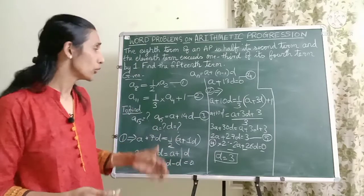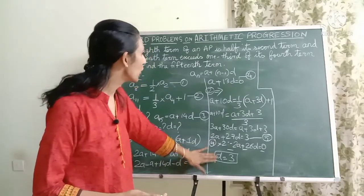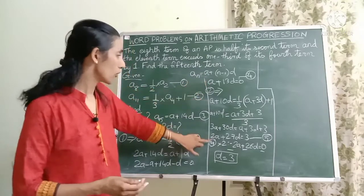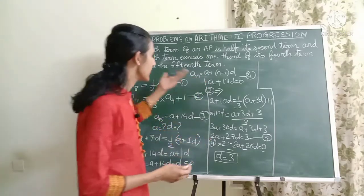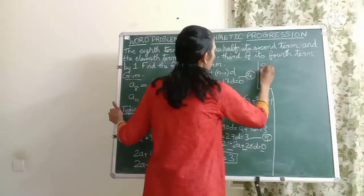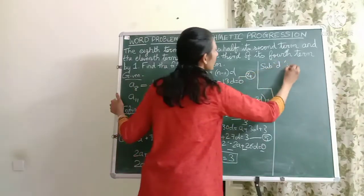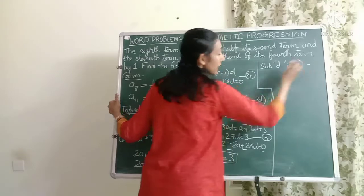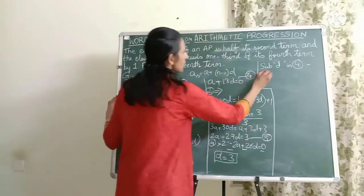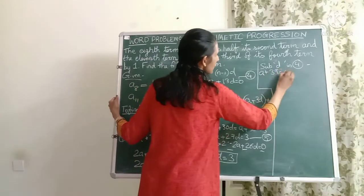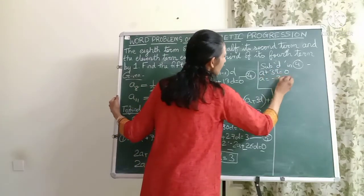Now what do I need to do? You know that you just need to put the value of D in any of these equations, either here or here. Obviously, take the simple one. So I'll substitute D value in 4. This will be A plus 13 into 3 is 39. So A is minus 39.